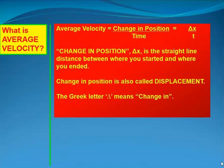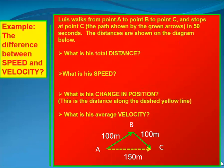The Greek letter delta means 'change in.' Luis walks from point A to point B, then from B to point C, stopping at C — walking along the green arrows shown in the diagram. He does this in 50 seconds. The total distance he walked is 100 plus 100, or 200 meters.